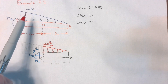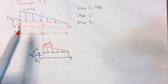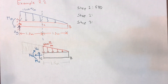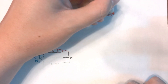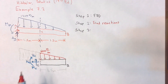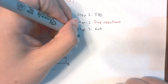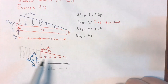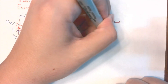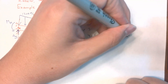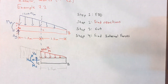So similar triangles: if we had cut at one meter, one-third from the left, the magnitude would have been two-thirds of 1200, which is 800. Step two — finding all reactions — we're skipping because we don't need it. If we don't need to solve it, why solve it? Step three was to make our cut, which we did. And finally, step four will be to find our internal forces by applying the equations of equilibrium.